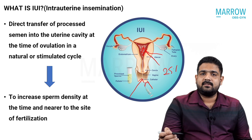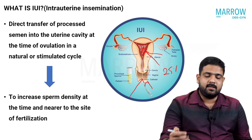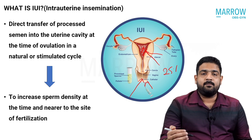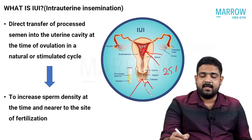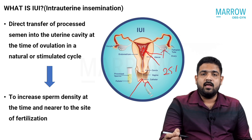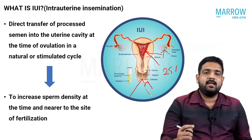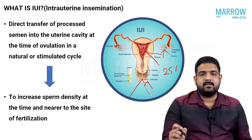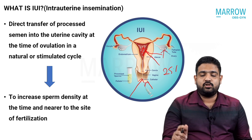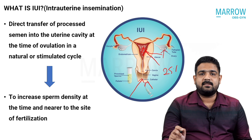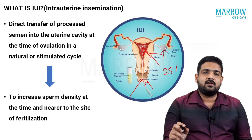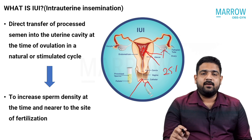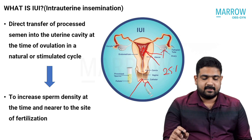Apart from this, we also stimulate the ovary so that more number of eggs are released — there may be one or two — which also increases the chance for a successful conception. So these are the two rationales behind the procedure of intrauterine insemination.